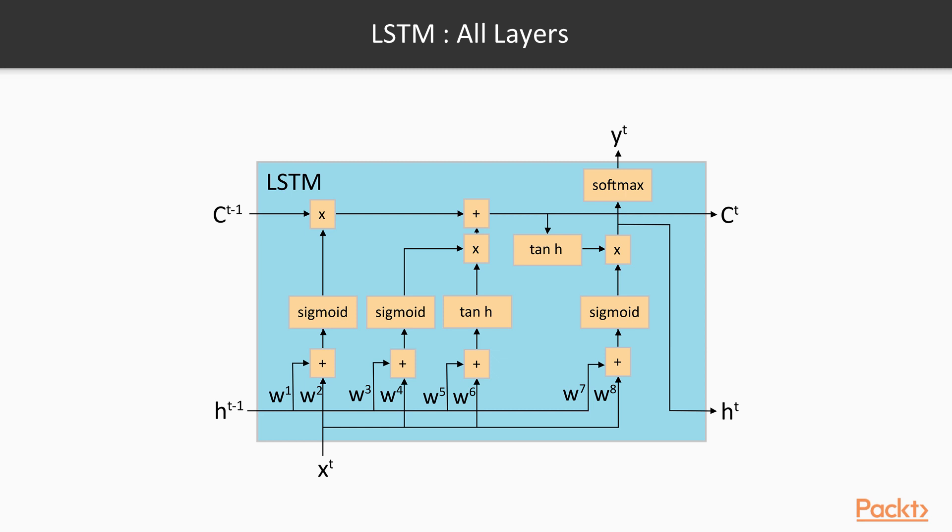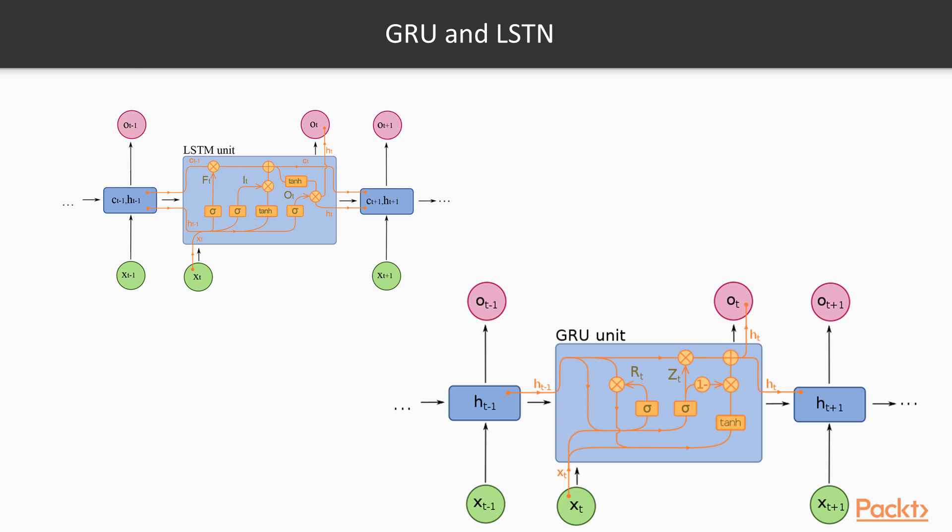The difference in the result is small. Usually, gated recurrent units perform a bit worse than LSTM cells, but they take much less time to train. Still, if you want to get the best performance, an LSTM cell is your best bet. Though, you can still try with a gated recurrent unit, because in some cases it can perform just as good as an LSTM, just much less computationally expensive.